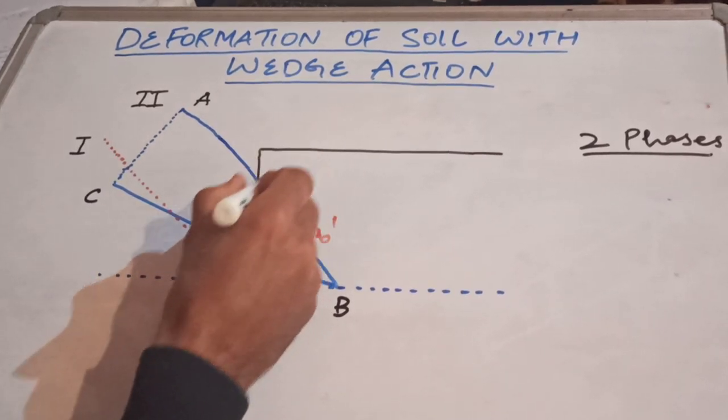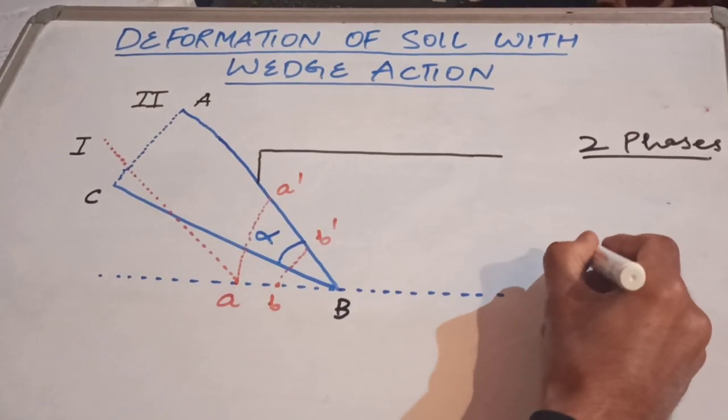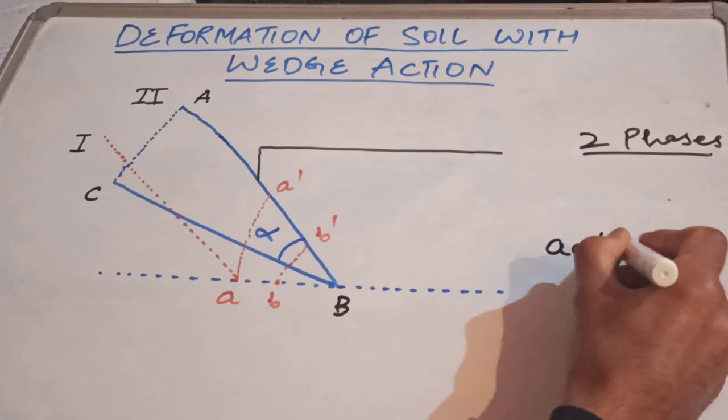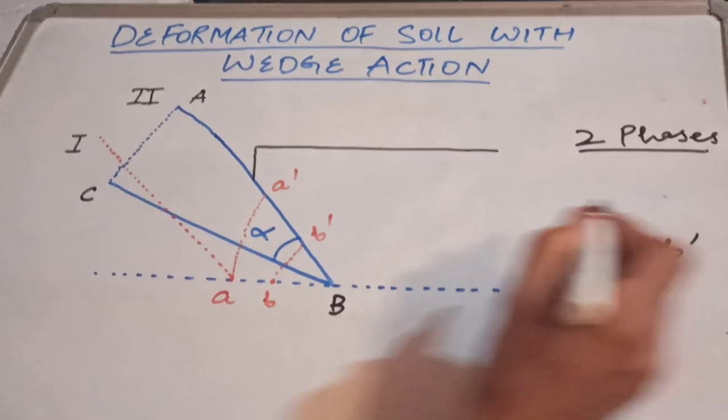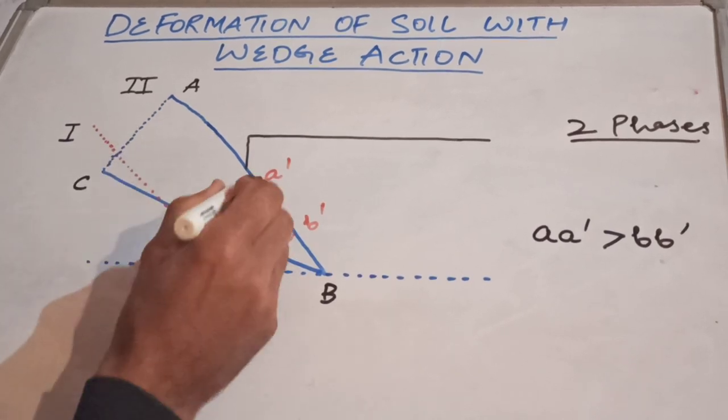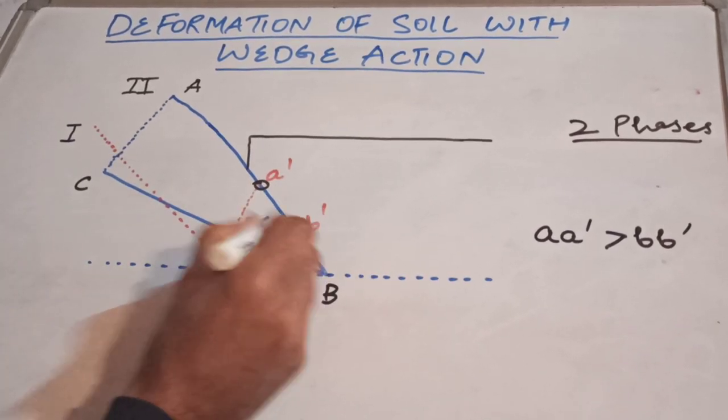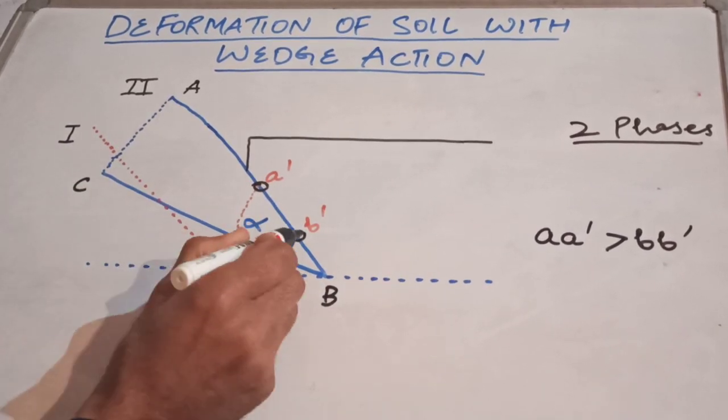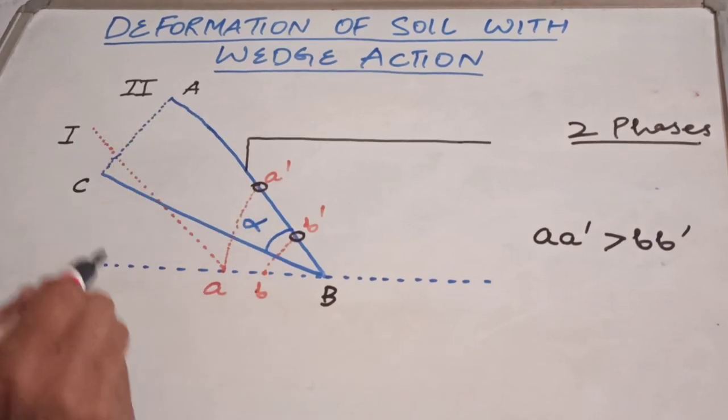If you will see, this distance a to a dash is greater than b to b dash. What it means is that the bearing strength at point A will be much higher than the bearing strength at point B. As you go higher, bearing strength keeps increasing.